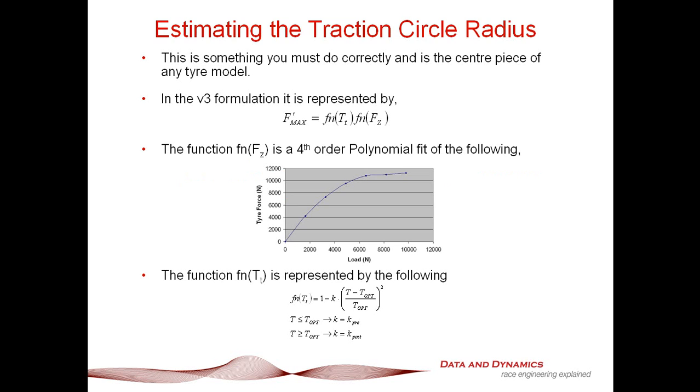Let's talk about the existing paradigms we've got out there for modelling the traction circle radius. The traction circle radius, F' max, can be basically a normalized function of temperature multiplied by a function of load. What the normalized function T does is that it's a function scaled between 0 and 1 that's effectively a function of temperature.